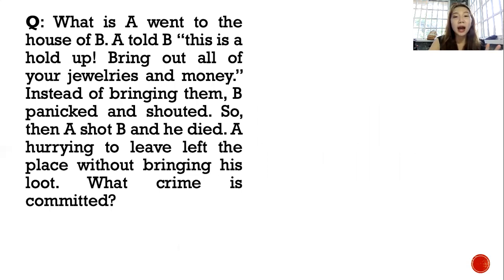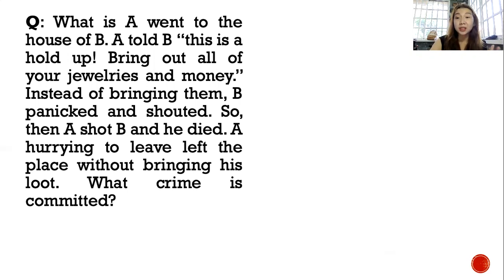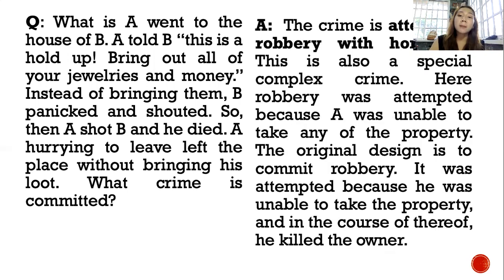Here is an example: A went to the house of B and said 'hold up' — bring out all your jewelry and money. Instead of complying, B panicked and screamed, so A shot B and B died. A panicked and wasn't able to take anything. What crime was committed? The crime here is attempted robbery with homicide. Robbery was attempted because A wasn't able to take any property. The fact that A announced the hold-up already shows the original design was to commit robbery. It was attempted because he was unable to take any property, but in the course of the attempt he killed B.